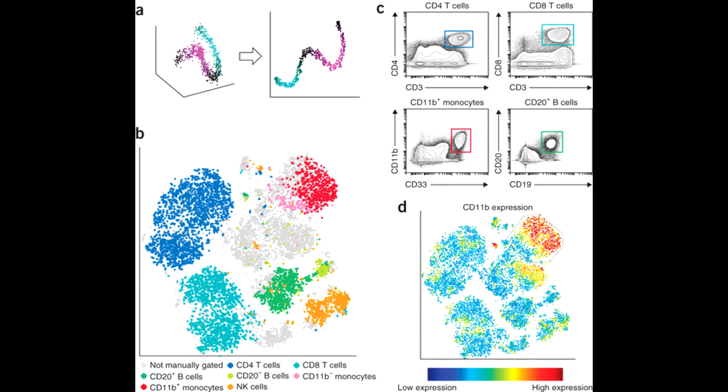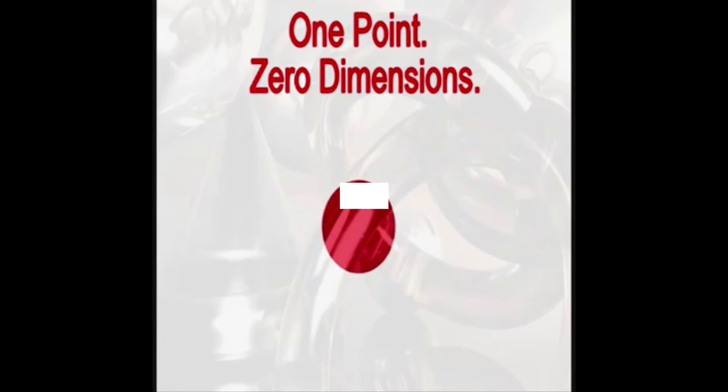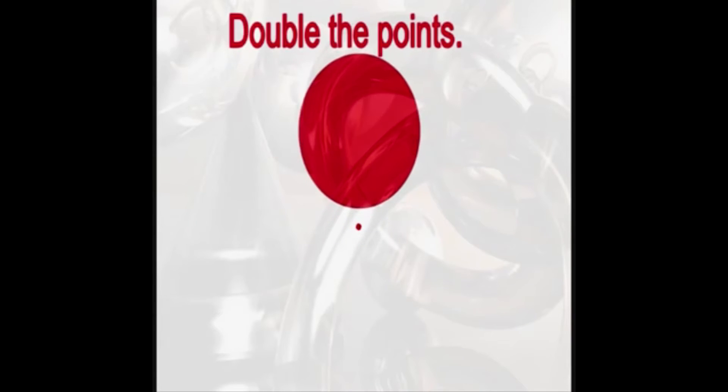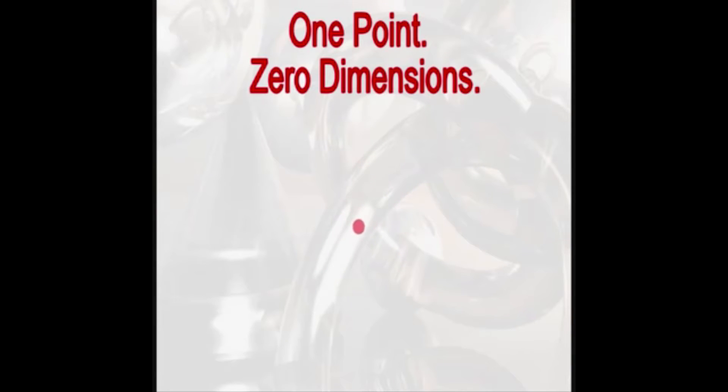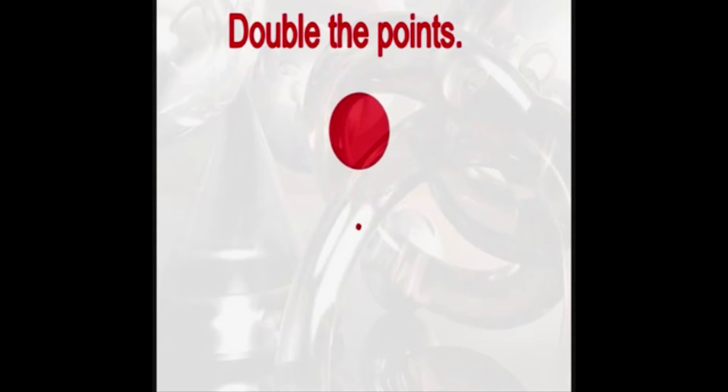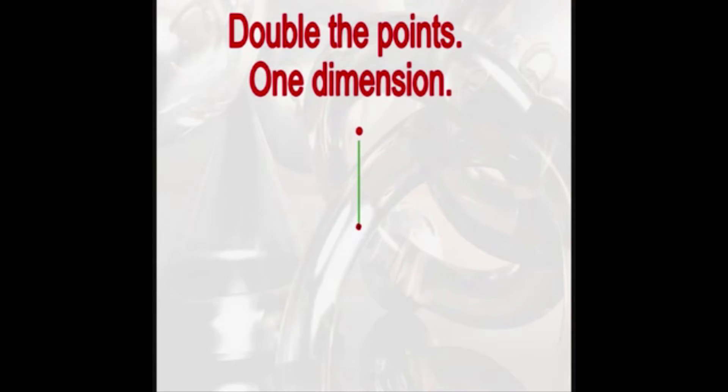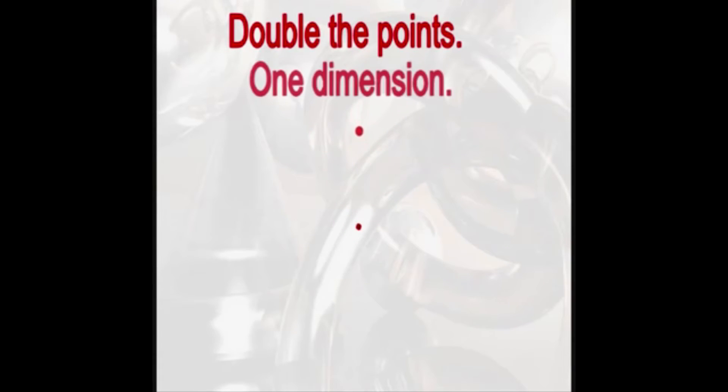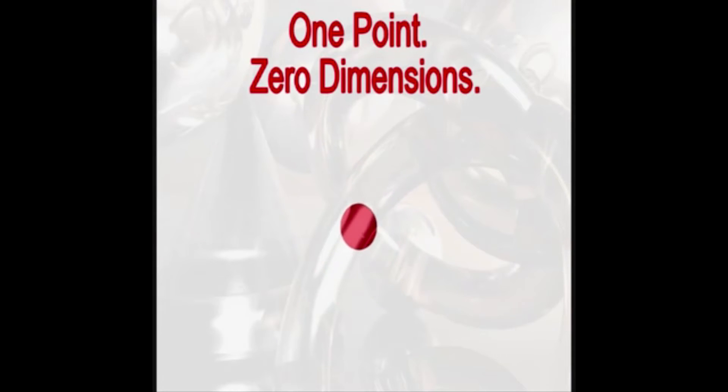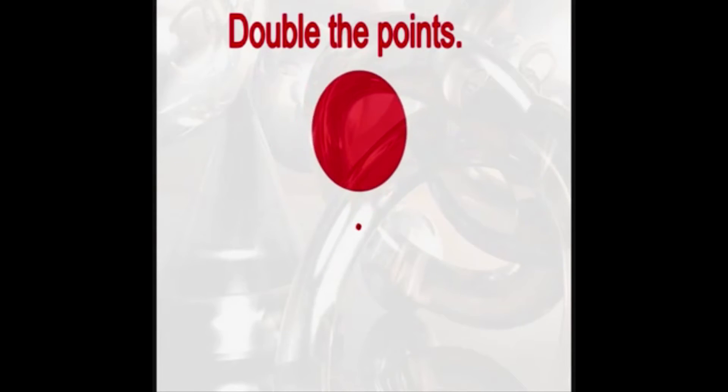Now, why do we care about reducing the dimensionality of our data? First of all, what is dimensionality? Dimensionality refers to the minimum number of coordinates needed to specify any point within a space or an object. So a line has a dimensionality of one because only one coordinate is needed to specify a point on it.